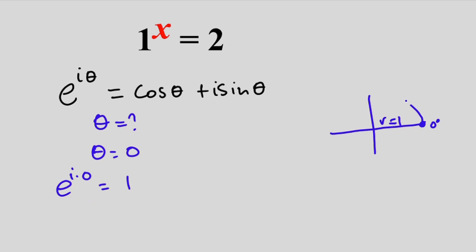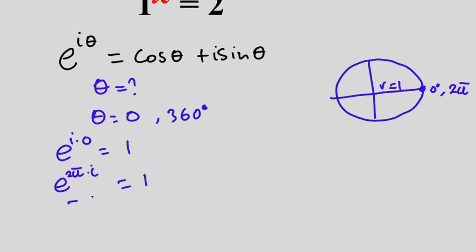If we move 360 degrees, we are going to have theta to be equal to 360 degrees. Now, 360 degrees in radians, that would be 2 pi. Now, if we put this into the equation, Euler's equation, we have e to the power 2 pi times i is equal to cos of 360, that is 1, then plus sin of 360 is equal to 0. We still have this equation over here.